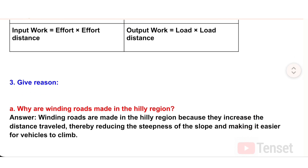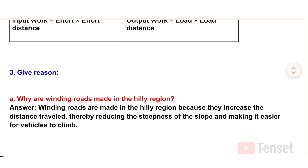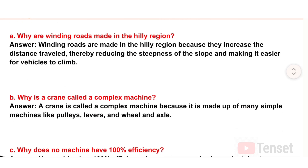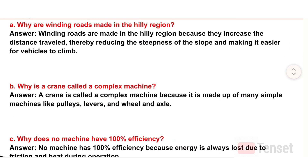Question 3: Give reasons. A) Why are winding roads made in hilly regions? Answer: Winding roads are made in hilly regions because they increase the distance traveled, thereby reducing the steepness of the slope and making it easier for vehicles to climb.